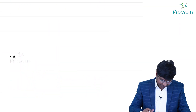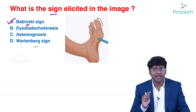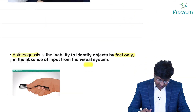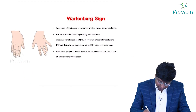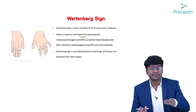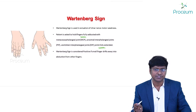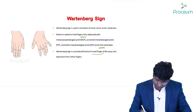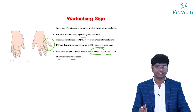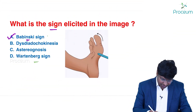The Wartenberg sign is used to evaluate ulnar nerve motor weakness. The patient is asked to hold fingers fully abducted with metacarpophalangeal, proximal, and distal interphalangeal joints fully extended. Wartenberg sign is positive if the small finger drifts into abduction away from the other fingers. So the answer to this question is the Babinski sign.